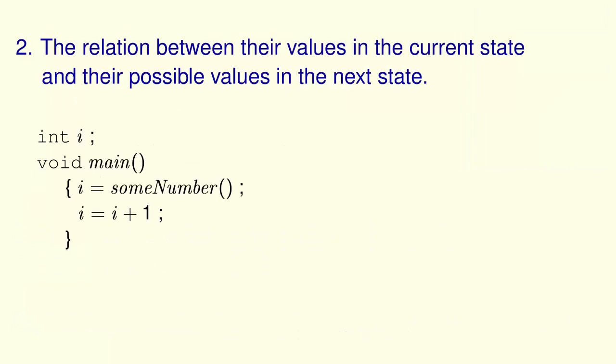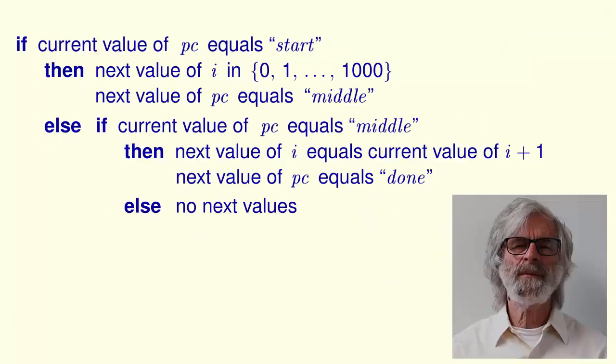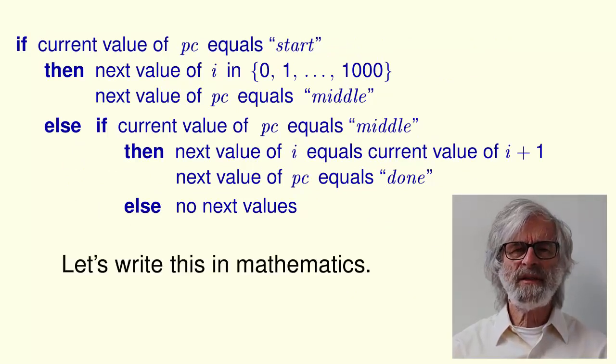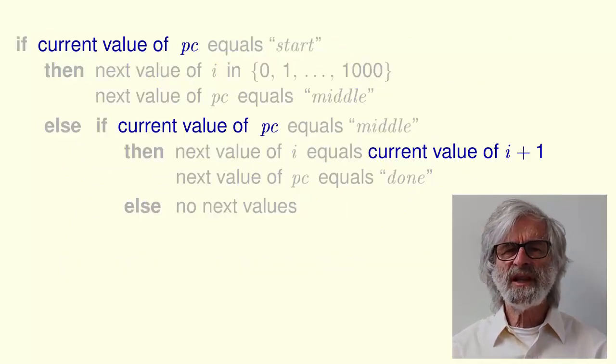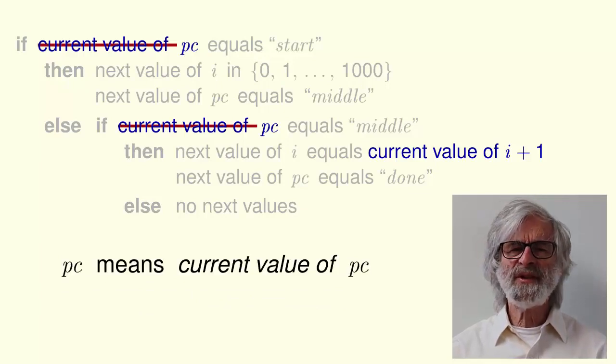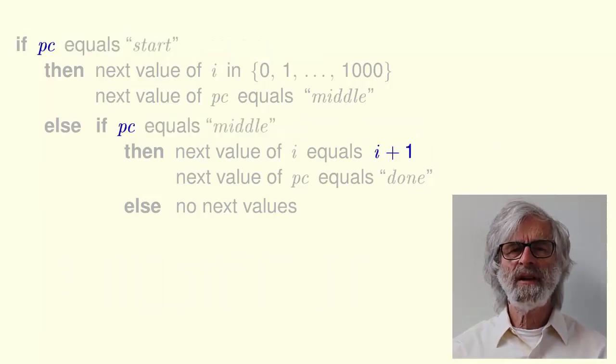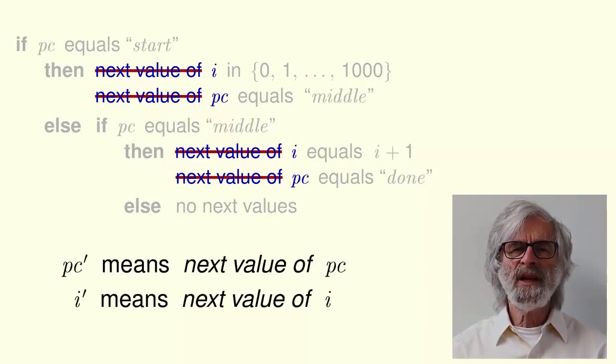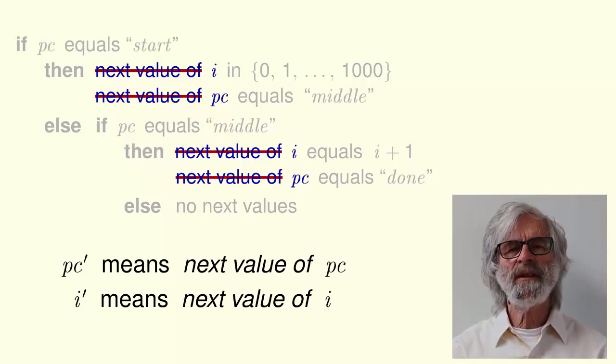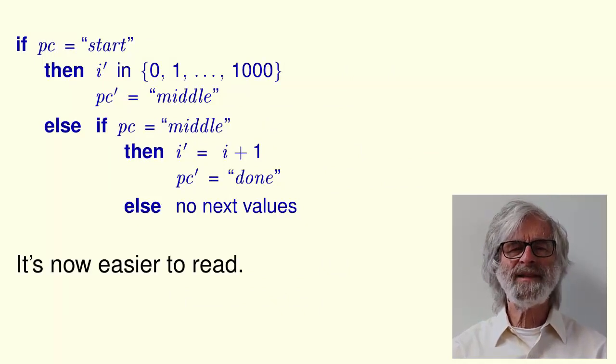Now let's describe the relation between the values of the variables in the current state and their possible values in the next state. Here's how I did it in the previous lecture. Okay, let's now write this in math. This requires replacing words with some notation. First, let's get rid of current value of. We simply let PC mean the current value of PC, and let i mean the current value of i. Next, we get rid of next value of. By letting PC prime and i prime mean the next values of PC and i. And finally, we replace the word equals by an equal sign. It's now a lot easier to read. But it's not yet a mathematical formula.